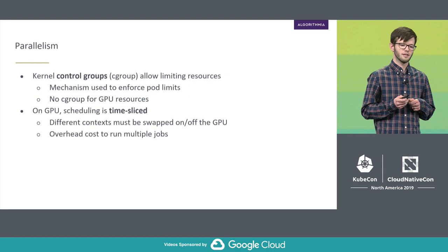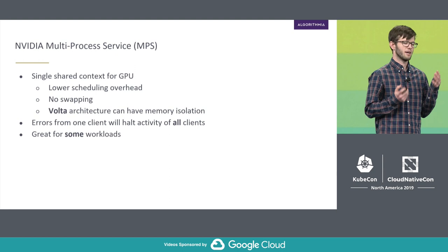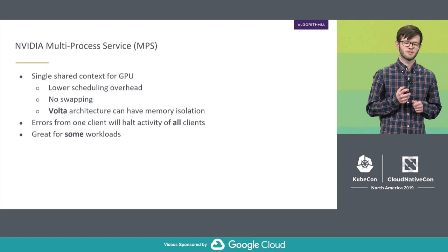To alleviate context switching, NVIDIA has MPS. It's a way to share a single CUDA context between multiple processes, so you no longer have to pay that context switching penalty. However, if one process throws an exception, all processes will halt at the same time, so it's not a great fit for all workloads, in particular if they're really mixed.